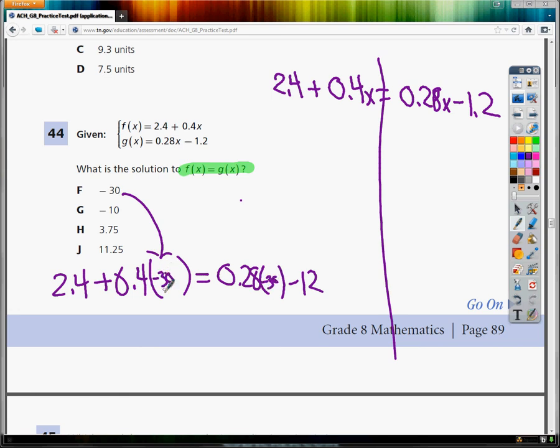If I type in all this side and it gives me a number. So I type in 2.4 plus 0.4 times negative 30. And that gives me, when I hit equals, negative 9.6.